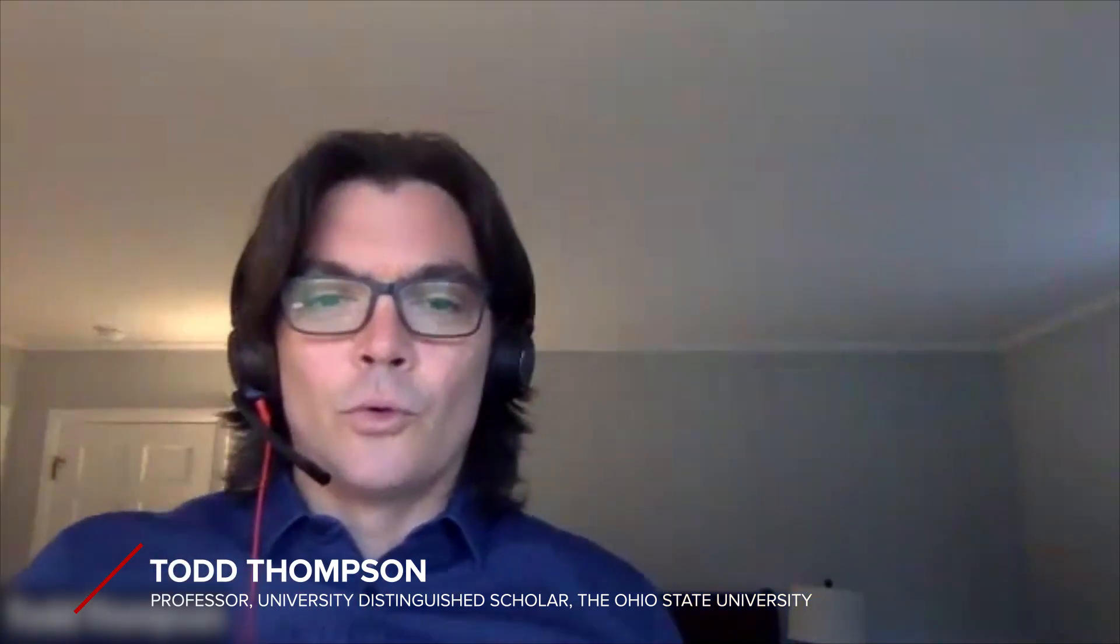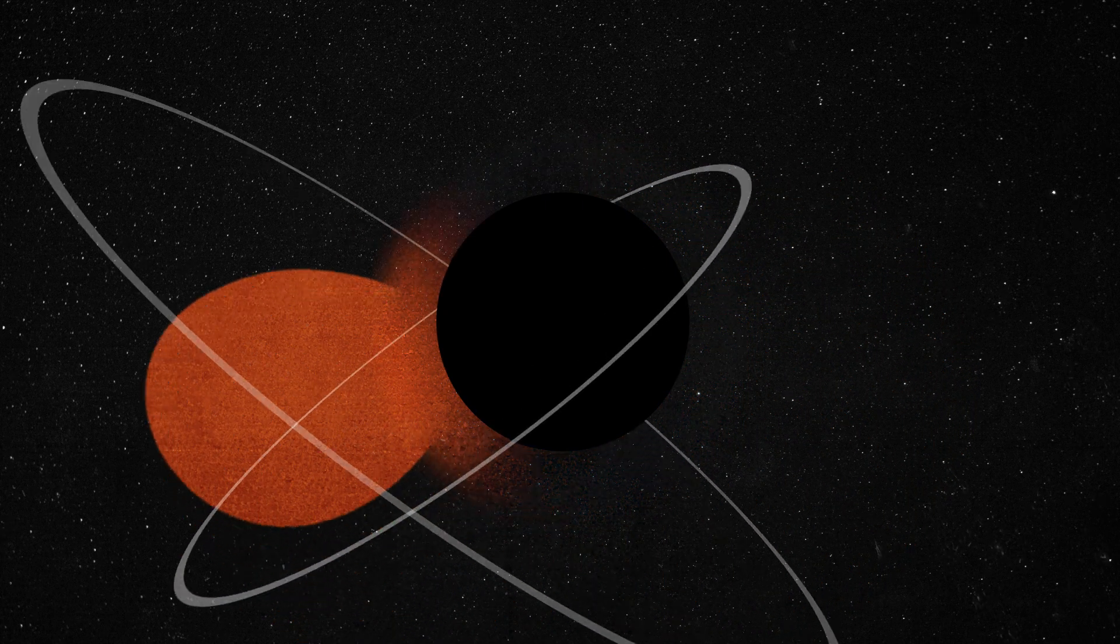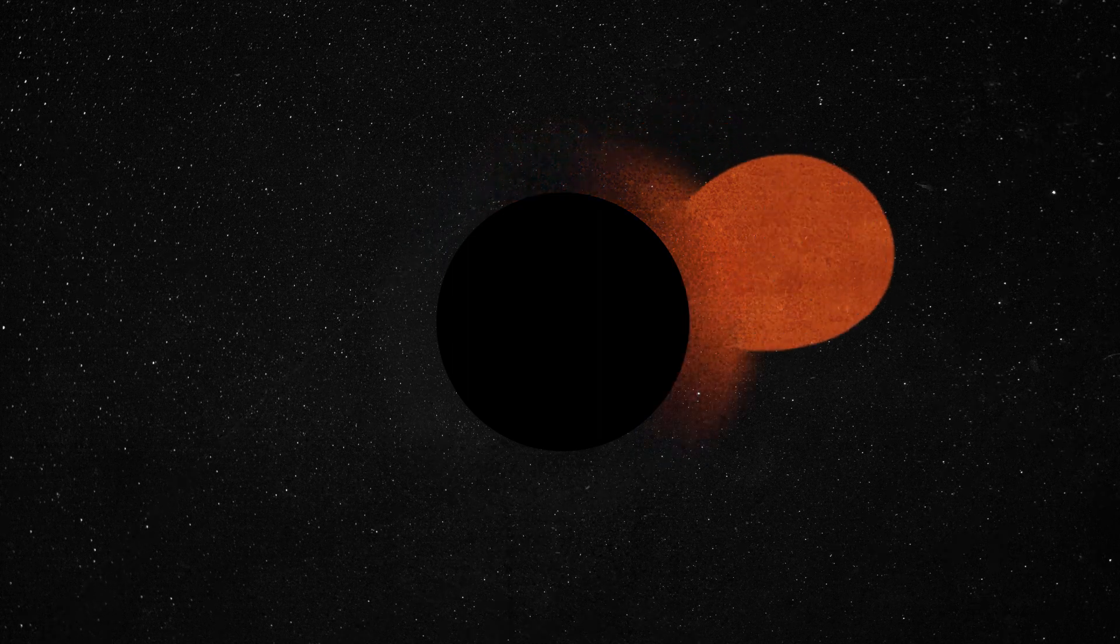The way that's yielded the most black holes was to go look for x-ray emission. The black hole is stripping material off of the star. And as the black hole strips material off of the star, it emits a bunch of x-rays. And those x-rays are very prominent.